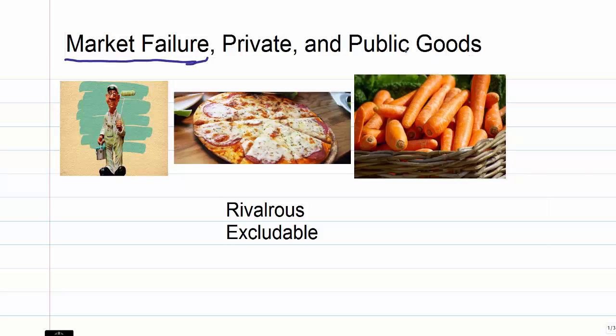First let's talk about private goods. It could be a service as well or things like painting services. So here's a guy that you might want to hire to paint your house. Here's a pizza. That's an example of a private good. A carrot is something that is a private good. Other examples would be things like electricity or cars or houses. These are all things that are private goods.